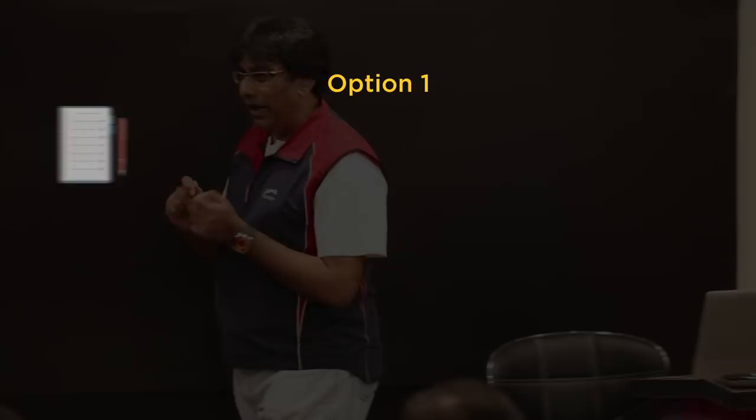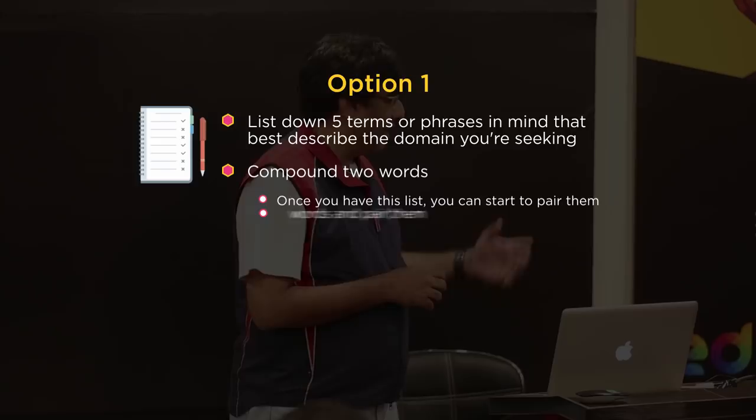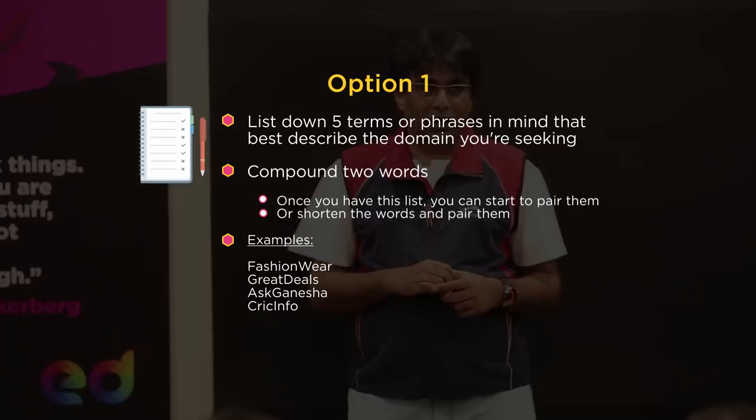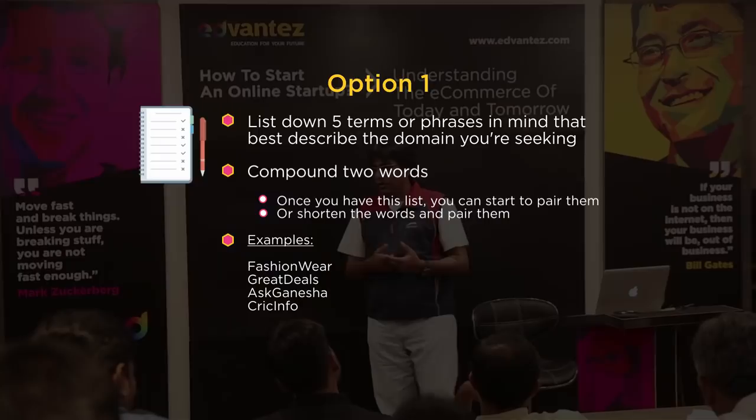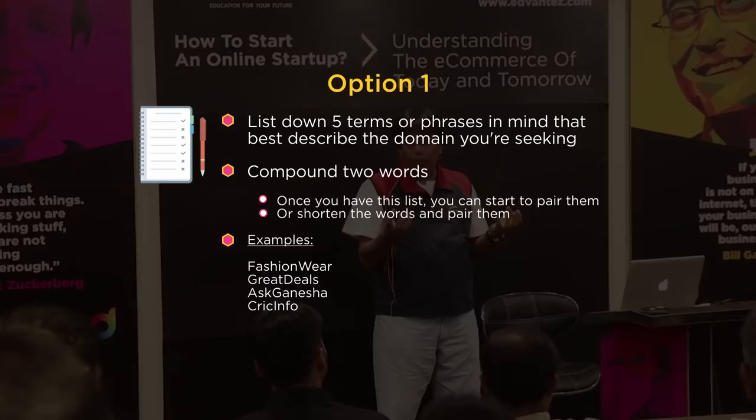Compound these two words, join them. For example, fashion wear, great deals, or Crick info — cricket information is short for Crick info. If you can take at least two words and join them, there is a very high possibility that you will get a domain name within the meaning you want to convey to the world.